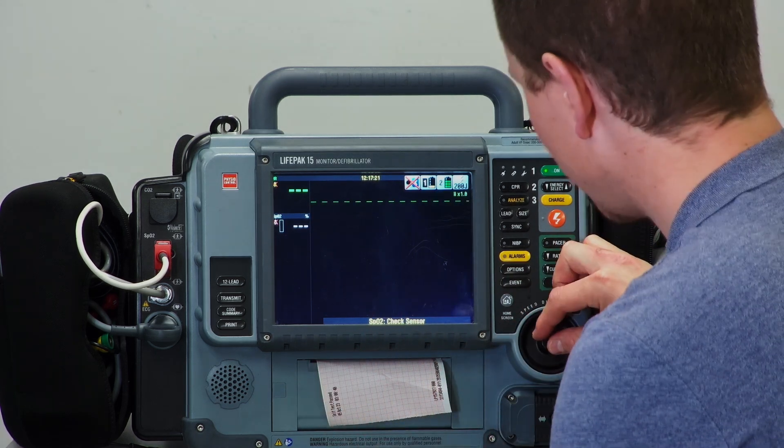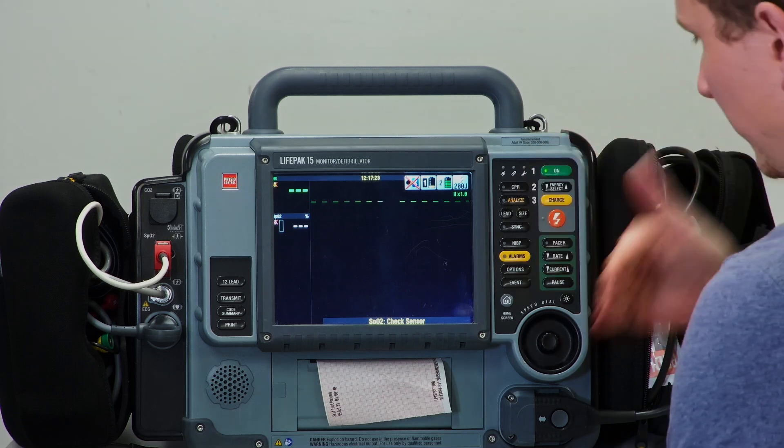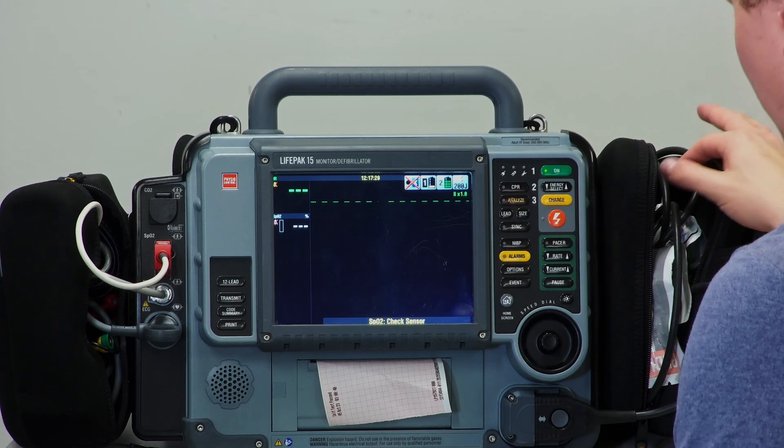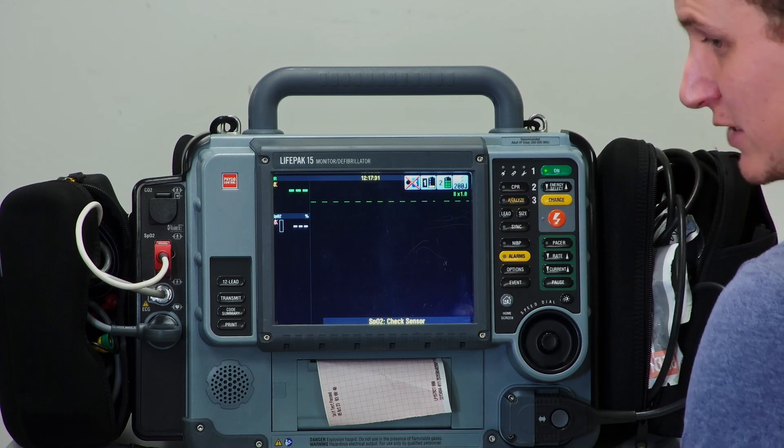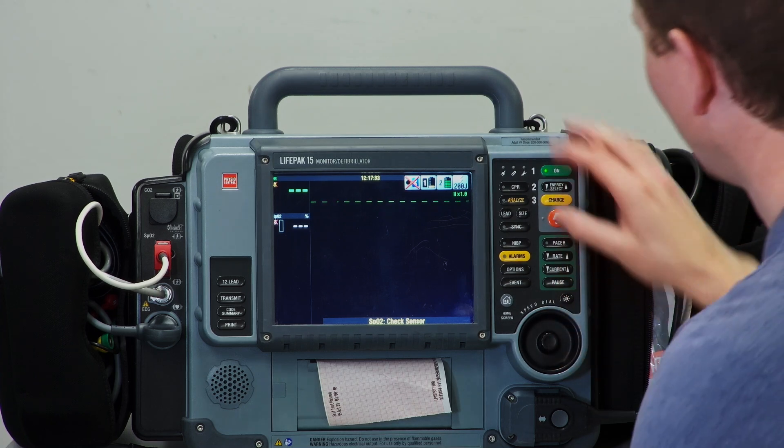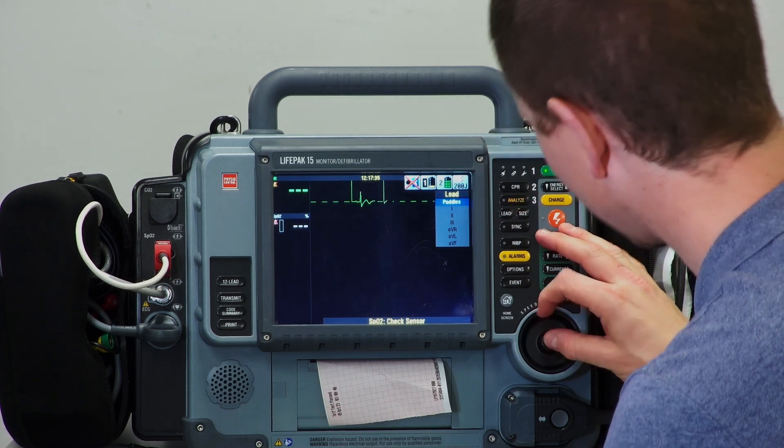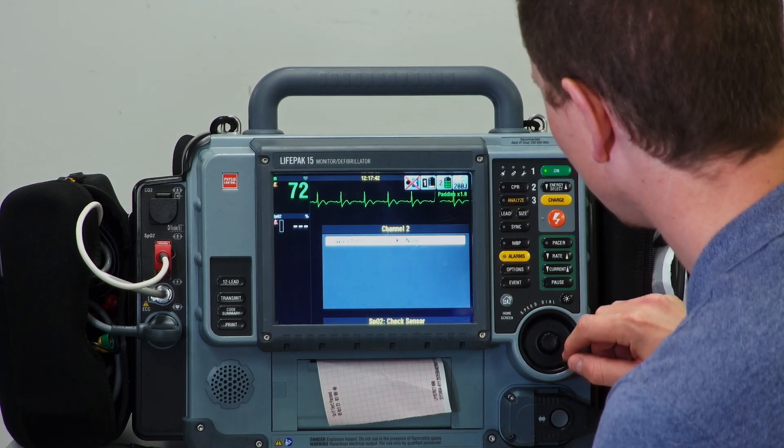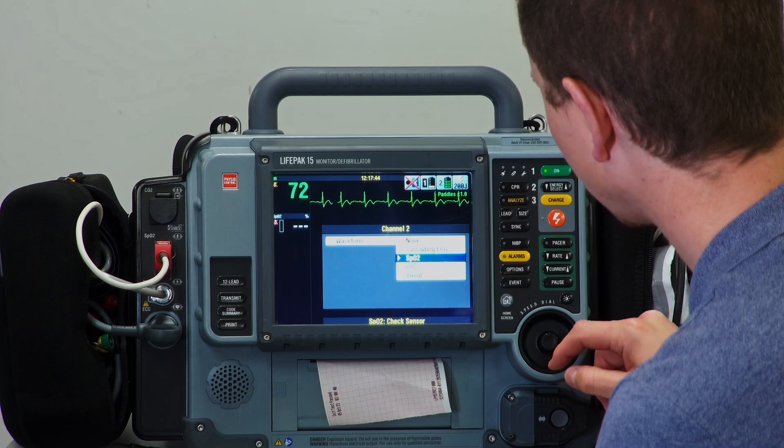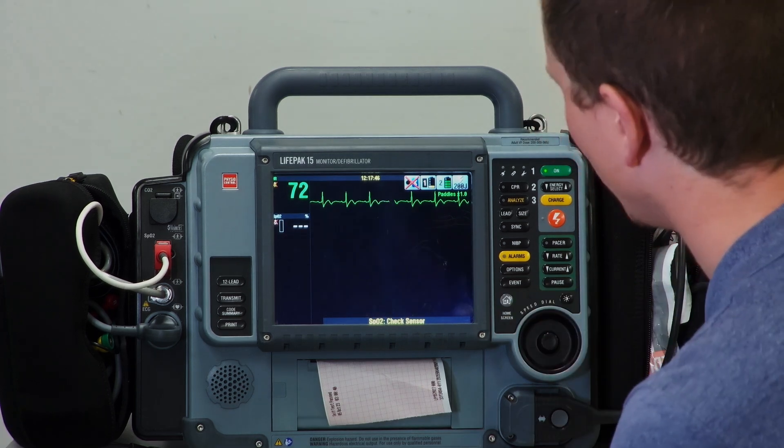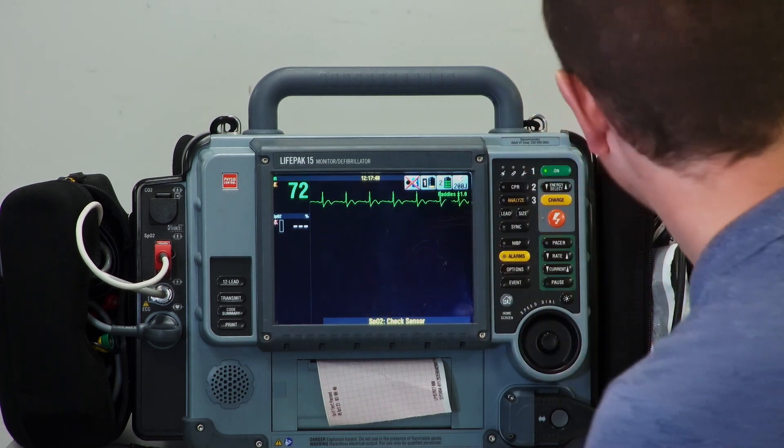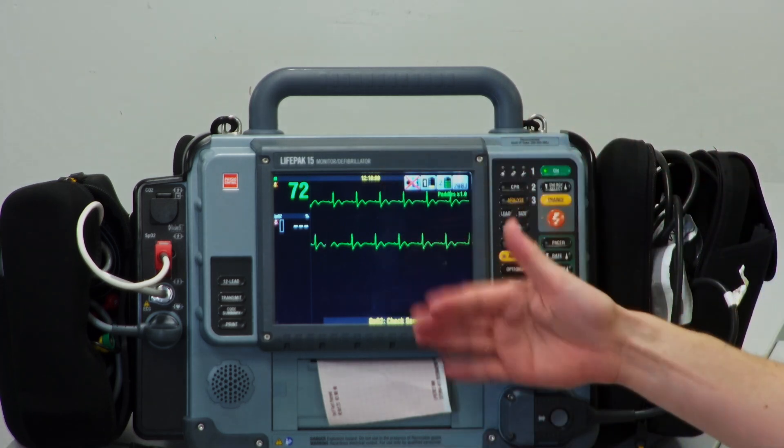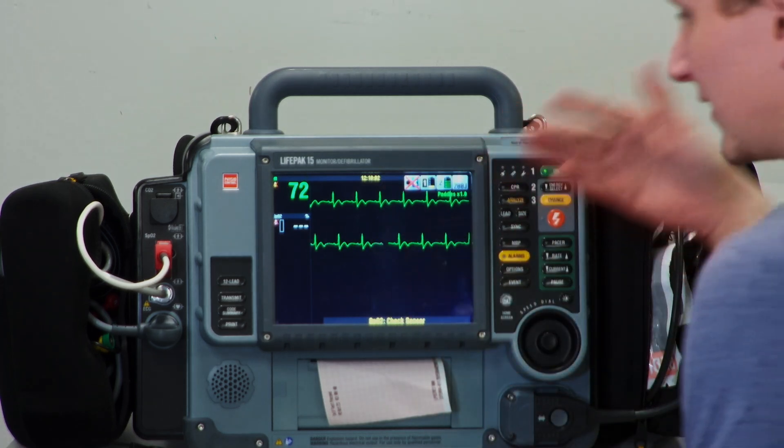The reason we can't see the rhythm being generated is because it's on lead two, but this has been plugged into the cables for the paddles or pads, so we need to go to lead and select paddles. Now we have an ECG. I'm going to scroll down, select, and say cascading ECG—that's just so we can see more of an ECG on the screen. Now that we can see an ECG, we've selected the right lead.